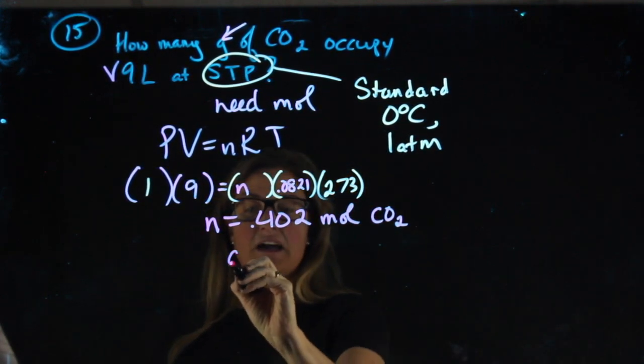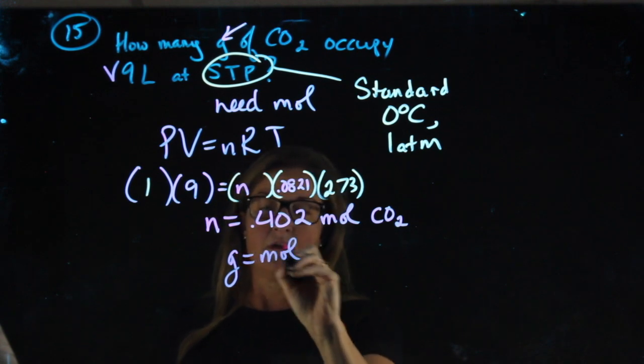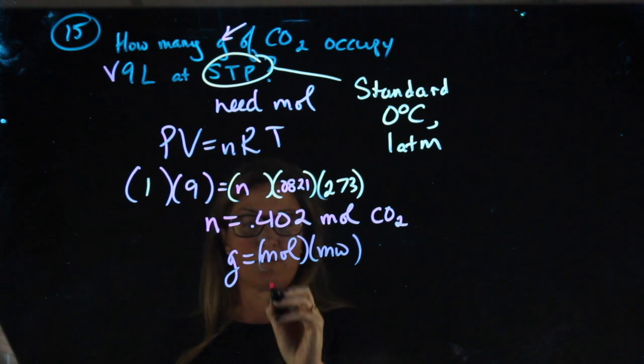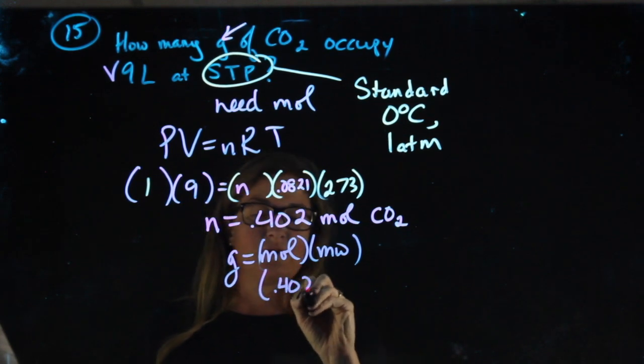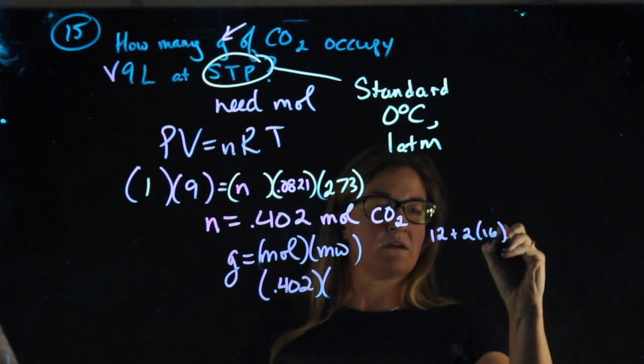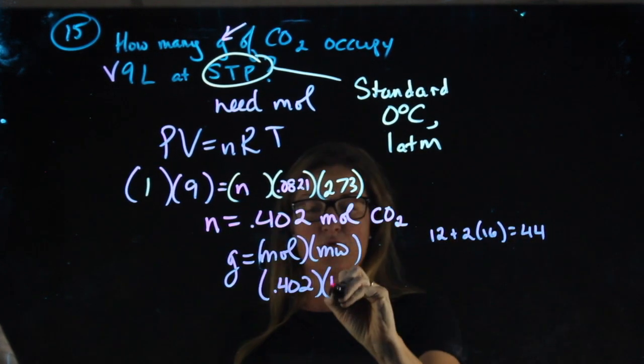If I want the grams of carbon dioxide, I can easily convert moles to grams by using grams equals moles times the molecular weight. 0.402. Molecular weight of CO2 is 44.